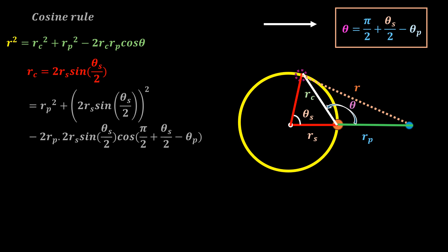By using the trigonometric identity cosine of pi over 2 plus a equal to minus sine of a, this equation can reduce to this, so that everything is in terms of sine.